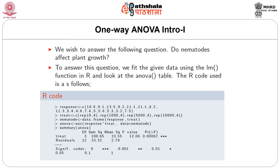You find the ANOVA using AOV and get a summary table with columns: df, sum sq, mean sq, F value, Pr(>F), and significance stars. Three stars means p < 0.0001, two stars p < 0.001, one star p < 0.01, and a dot for p < 0.05. The table rows show: treat — df=3, SS=100.65, MS=33.55, F=12.08, p=0.00062; residuals — df=12, SS=33.32 (approximately), MS=2.78. These numbers may be interpreted carefully or copied into a report.